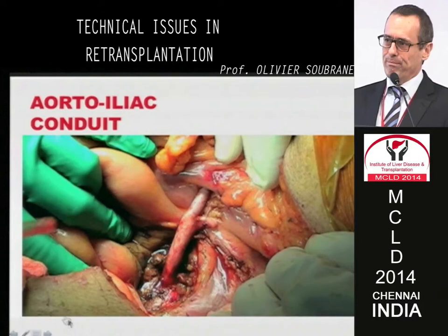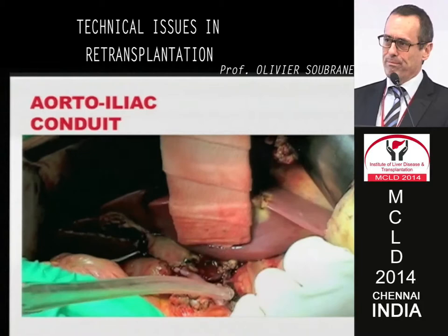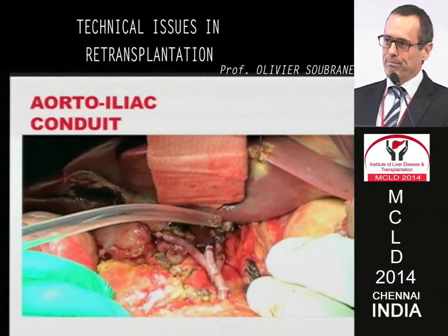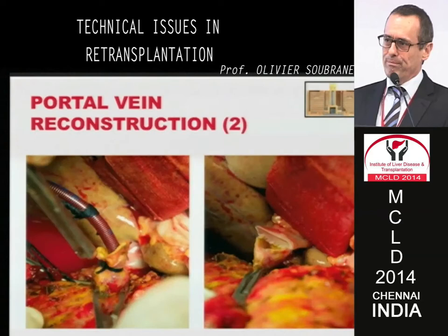Just to show the splenic artery and aorto-iliac conduit: you can see the conduit on the infrarenal aorta, passing behind the colon, and here the anastomosis to the celiac trunk of the liver graft without reperfusing the hepatic artery. Regarding portal vein reconstruction, when there is a thrombosed portal vein, you need to go very far behind the duodenum — you can see the splenic vein and superior mesenteric vein — and perform the anastomosis very proximally. When there is a cannula in the thick portal vein, after removing the cannula, the anastomosis is completed here.